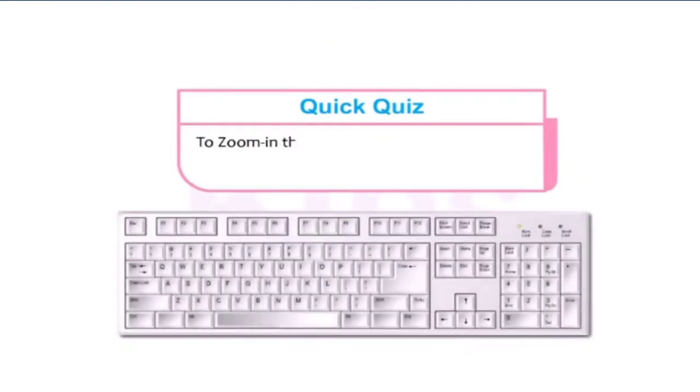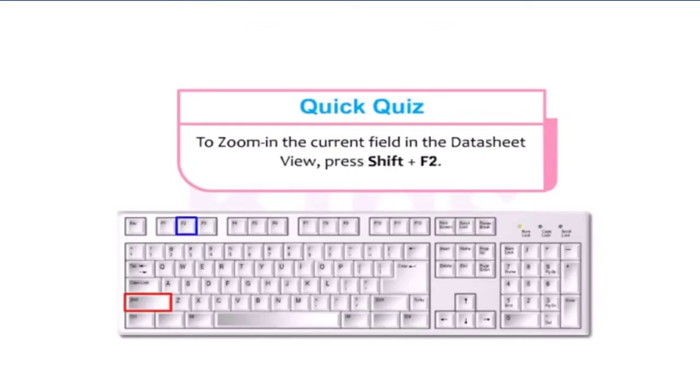Quick tip: To zoom into the current field in Datasheet view, press Shift + F2.